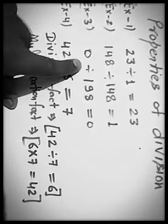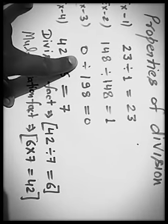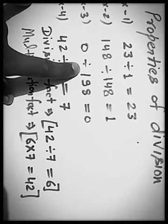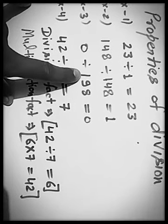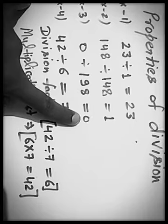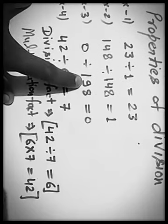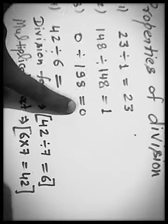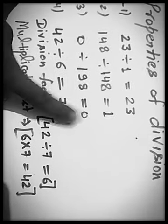Now, third example or third property. If 0 is divided by a number, other than 0, the quotient is 0. It means, 0 divided by 198 equals to 0. 0 divided by 1 crore, 0. 0 divided by 1 equals to 0. Clear?